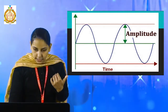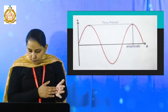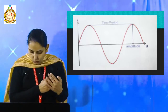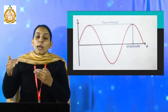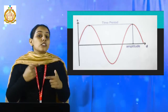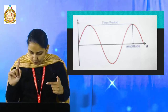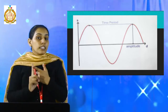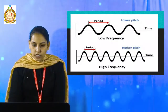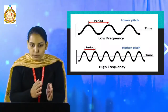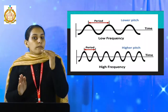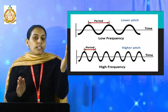Next is time period. It is the time taken to complete one vibration of the vibrating object producing sound, and it is denoted by capital T. Time period is measured in seconds — time in wave is always measured in seconds. Next is wavelength. Wavelength is the distance between two compressions, denoted by lambda. It is similar to time period, but we denote it by lambda instead.